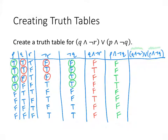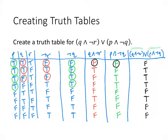Now we fill in the final column: (Q ∧ ¬R) ∨ (P ∧ ¬Q). OR is true if either or both pieces are true. Row by row: F∨F=F, T∨F=T, F∨T=T, F∨T=T, F∨F=F, T∨F=T, F∨F=F, F∨F=F — giving F T T T F T F F. The truth table is complete. When checking your work against someone else's, your intermediate columns may differ, but the final column sequence of Ts and Fs should be exactly the same.